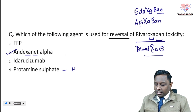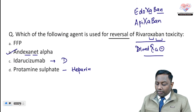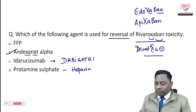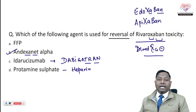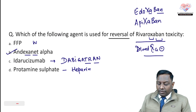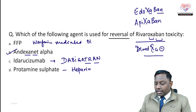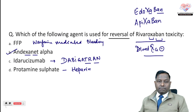Protamine sulfate is the antidote for heparin. Dabigatran is a directly acting thrombin antagonist which is orally effective. Fresh frozen plasma can be utilized if there is any warfarin-mediated bleeding.